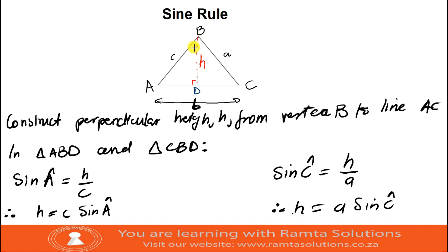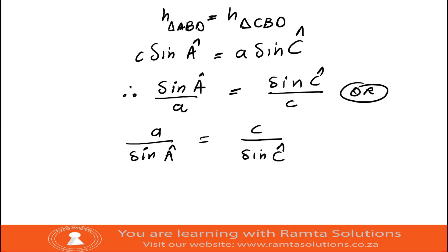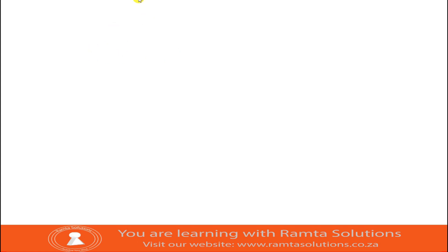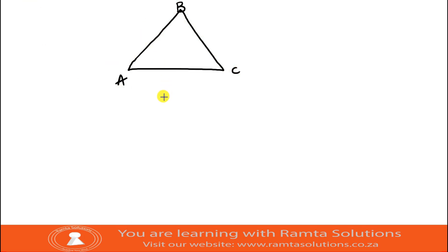This is part of the sine rule. However, this triangle has three vertices and we have only found a relationship for two of them. To find the third, we'll use the same triangle but change the perpendicular height. Let me redraw the triangle with vertices A, B, C and sides c, a, and b.